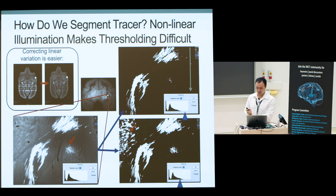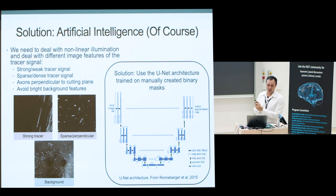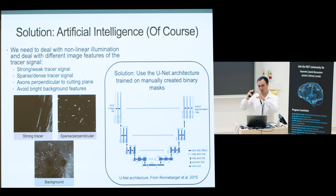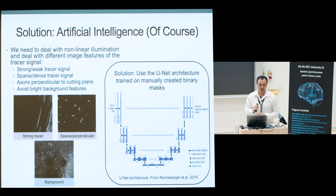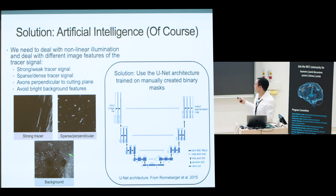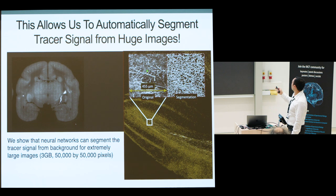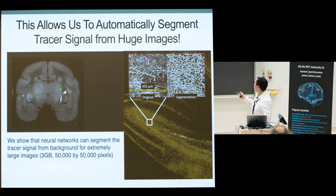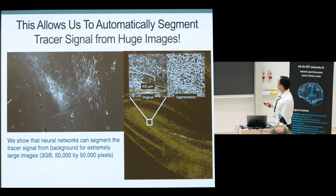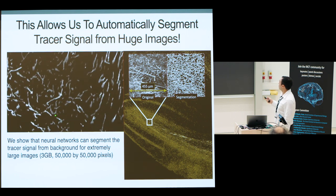To deal with that, we turned to artificial intelligence. We trained a U-Net architecture on manually created binary masks — we sliced large fluorescence images into small regions and manually drew masks, which took a very long time. We used this neural network to characterize the different features of the tracer and ignore the bright background. As a result, we could successfully do that. Here's a close-up of the occipital lobe — you can see the dense tracer signal and the segmentation after binarization, shown in a video of one coronal section.